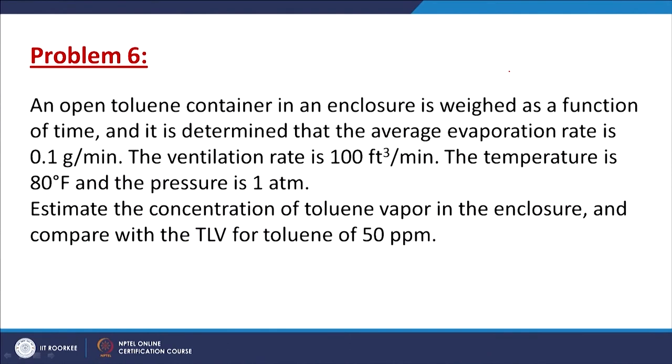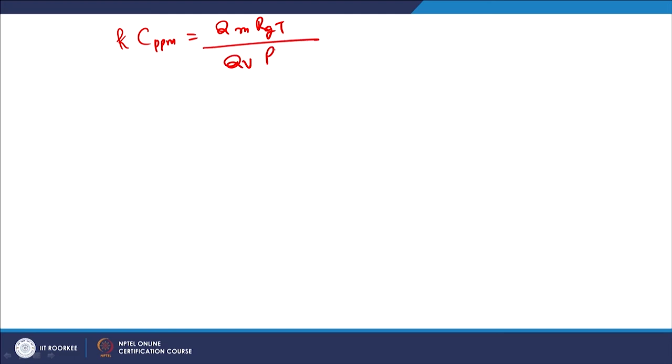Problem 6: An open toluene container in an enclosure has an average evaporation rate of 0.1 g/min. The ventilation rate is 100 cubic feet per minute, temperature is 80°F, and pressure is 1 atmosphere. Estimate the concentration of toluene vapour in the enclosure and compare with the TLV of 50 ppm. The formula used is: K·C_ppm = (Q_m · R · T) / (Q_v · P · M) × 10⁶.